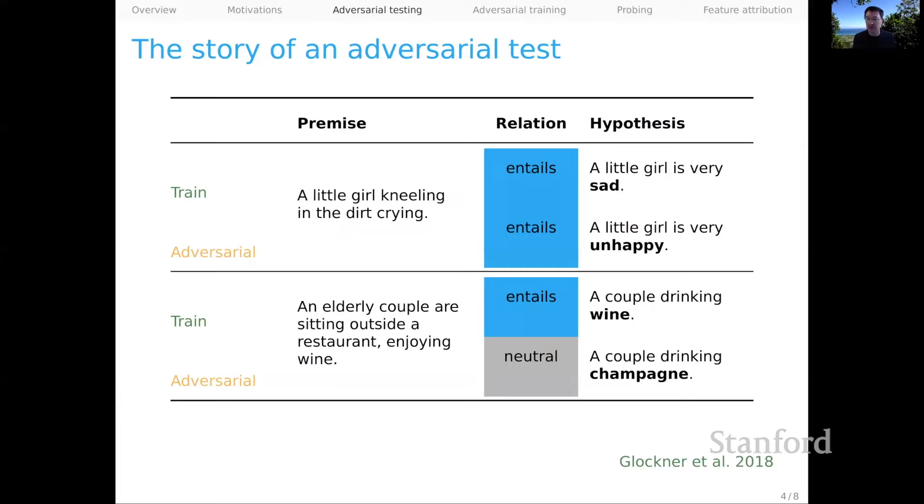Let's begin with adversarial testing. This is a mode we've talked about before. The examples on this slide are from this now classic paper, Glockner et al. 2018 called Breaking NLI. And what they did is only really mildly adversarial. It's just kind of a challenge, and it exposes some lack of systematicity in certain NLI models. So here's what they did. They began from SNLI examples like, a little girl is kneeling in the dirt crying, entails a little girl is very sad.